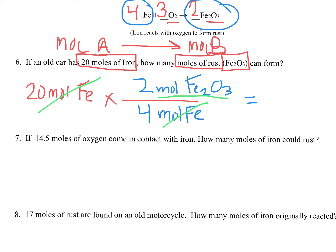In order to do this math problem, we know we multiply by the first number we've given, multiply by the top, divide by the bottom. So 20 times 2 divided by 4, that would be 40 divided by 4, so that would be 10. So you'd end up with 10 moles of rust, Fe2O3. Perfect.